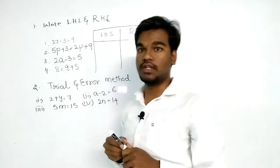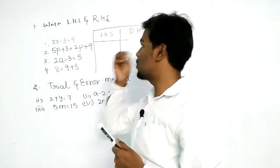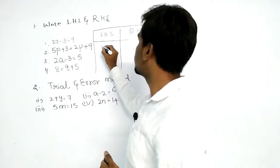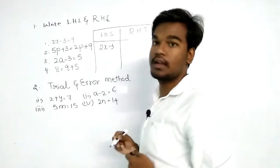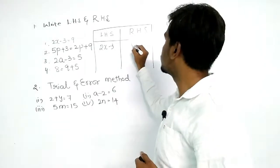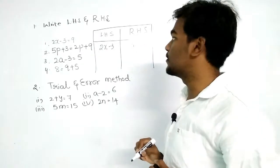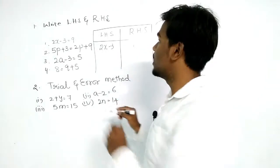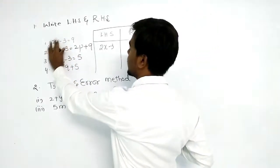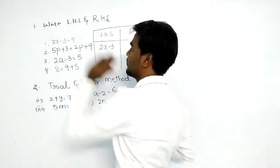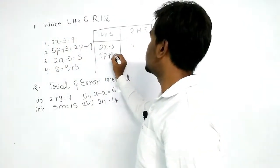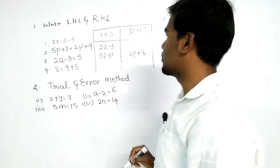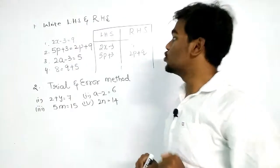For the first example, let's take 2x minus 3 equal to 9, where LHS will be equal to 2x minus 3 and RHS will be equal to 9. For the next one, 5p plus 3 equal to 2p plus q, so the left-hand side will be 5p plus 3 and RHS will be 2p plus q.